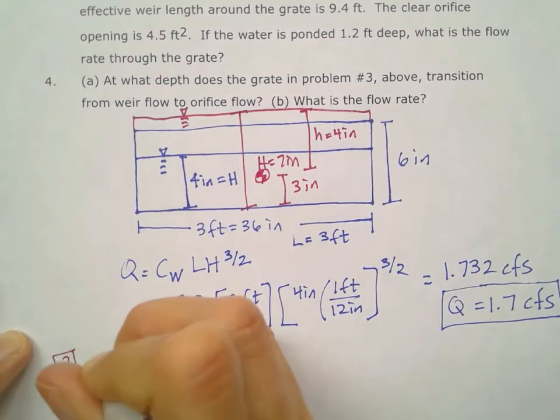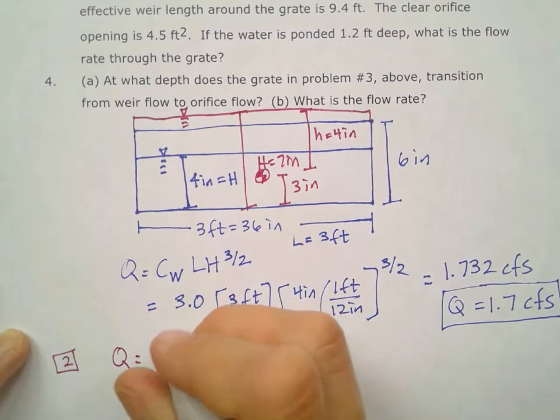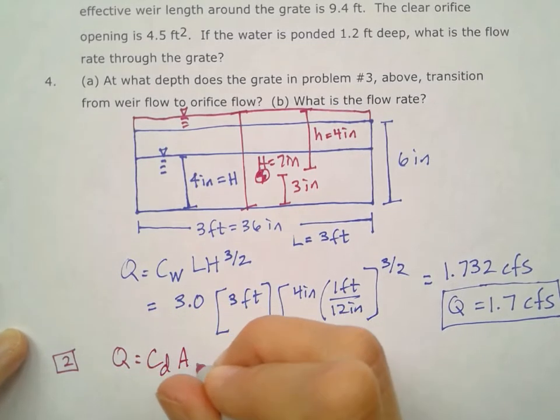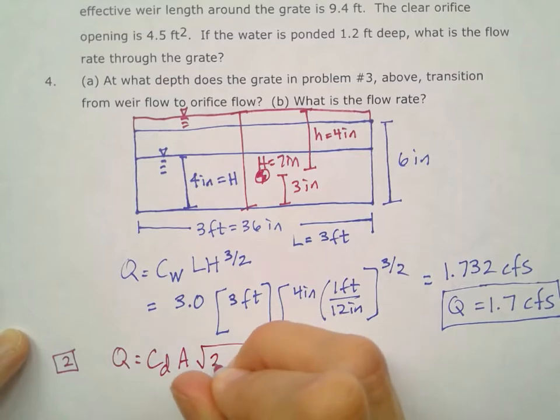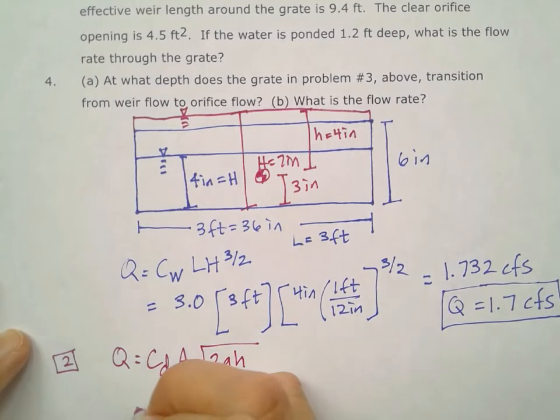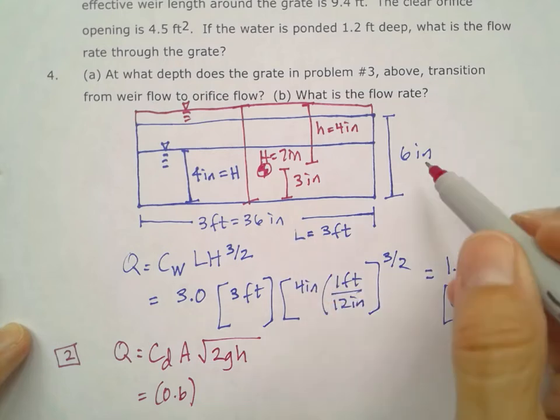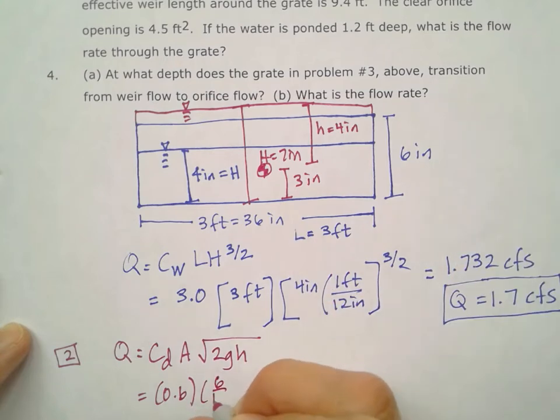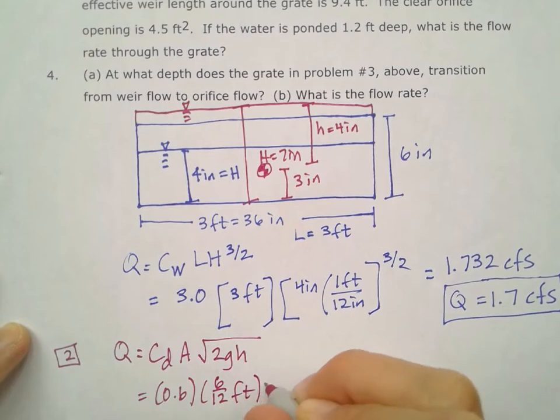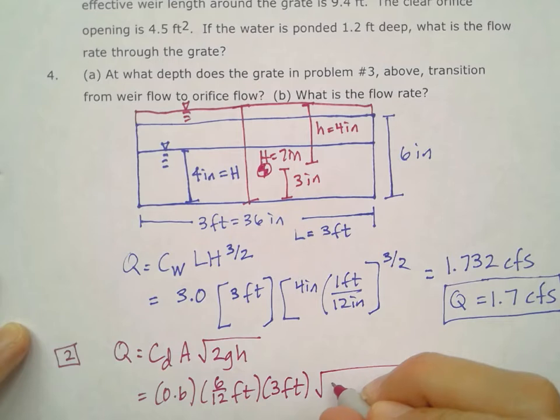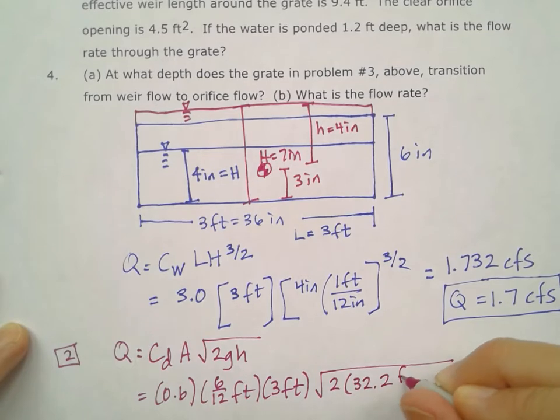So for our orifice equation, for number two, our Q is going to be C sub D times the A times the square root of 2gh. And so in this case we have the 0.6 default value. For my area it is that six inches, so we'll call that six twelfths of a foot times the three foot width there, times the square root of 2 times g, and again we're using our common units here so 32.2 feet per second squared.